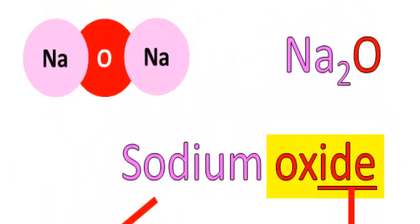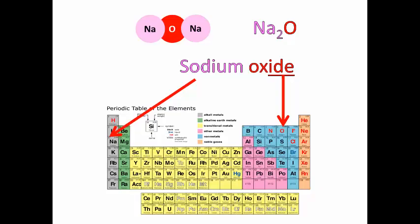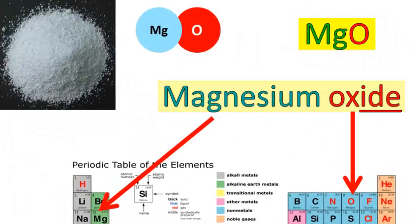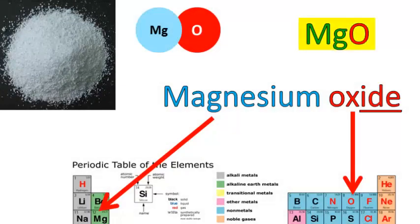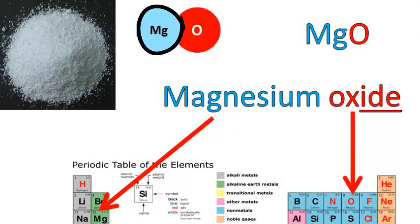Sodium oxide, Na2O. Magnesium oxide, MgO. Magnesium oxide is a white powder. The formula MgO tells us that in a molecule of magnesium oxide there's one Mg bonded to one O.